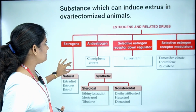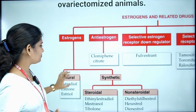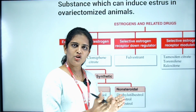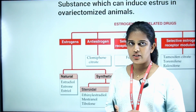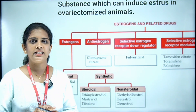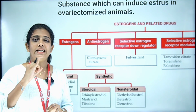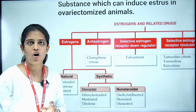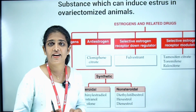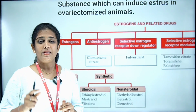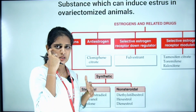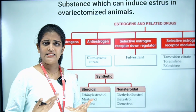Let's start with the main item. First, we need to classify the estrogens. We need to distinguish natural estrogens and synthetic estrogens. Natural estrogens are called Estradiol, Estrone, and Estriol. We need to remember these three forms of natural estrogens.